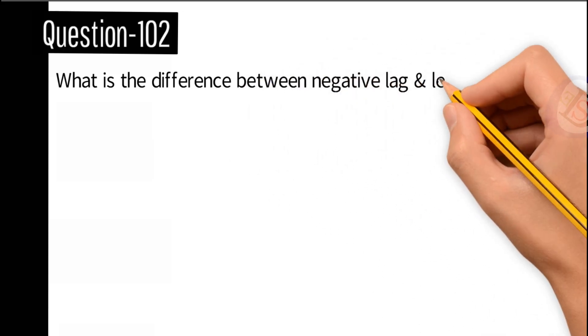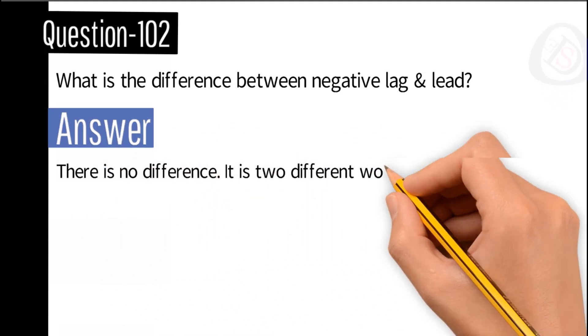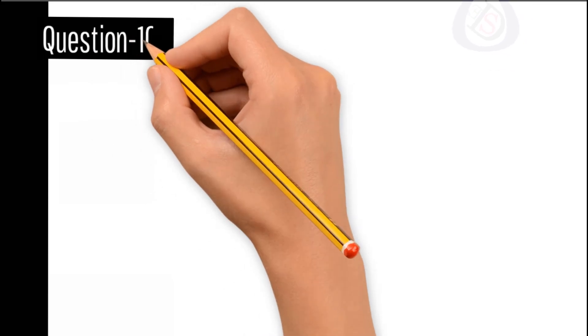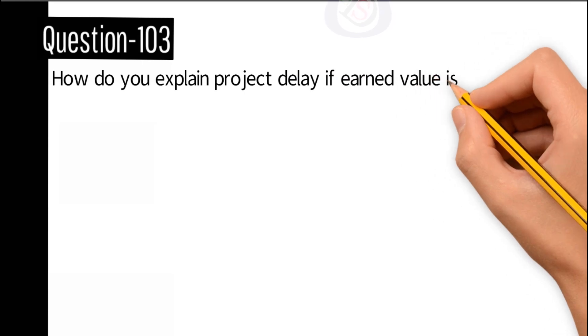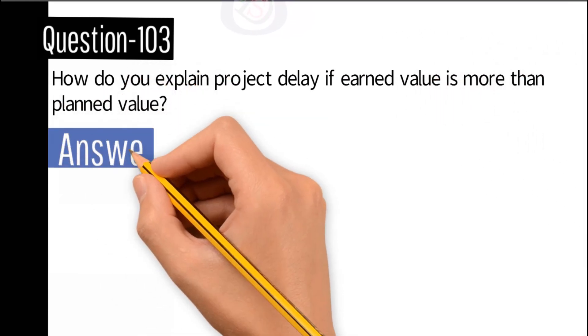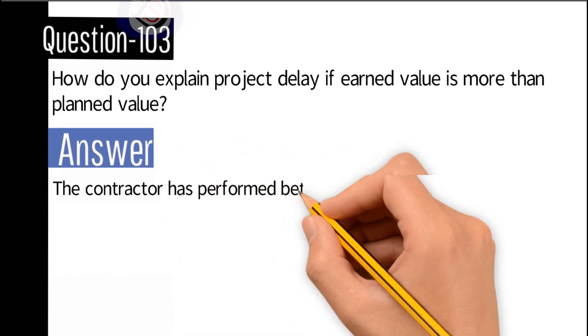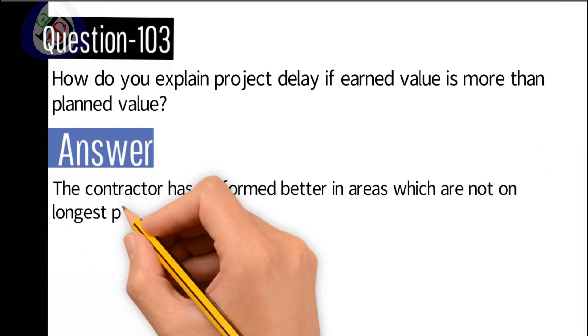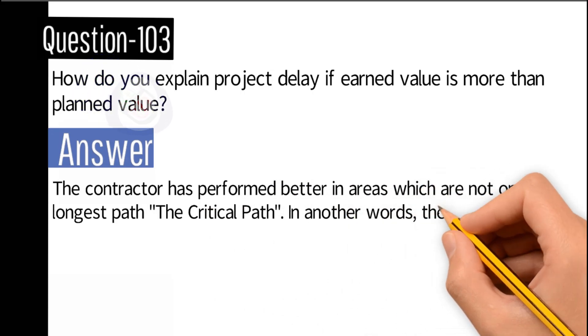Question number 102: What is the difference between negative lag and lead? Answer: There is no difference. It is two different words of the same meaning. Question number 103: What do you explain project delay if earned value is more than planned value? Answer: The contractor has performed better in areas which are not on the longest path, the critical path. In other words, the contractor executed the right quantity in the wrong place.